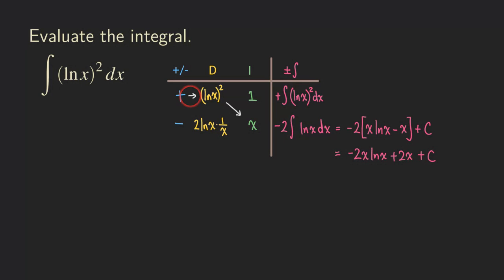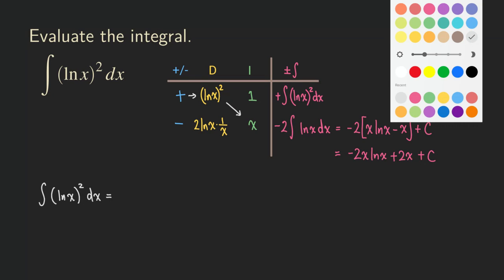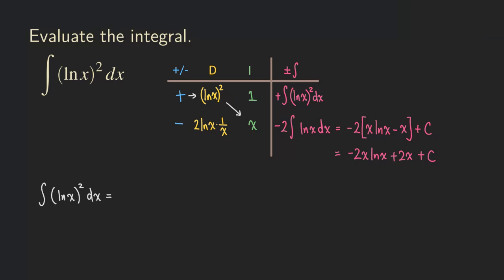And in this case, we have positive 1 times ln of x squared times x and then adding all that stuff. So the final answer would be positive 1. I'm not going to write it and I'm going to write the x first, right?